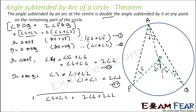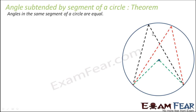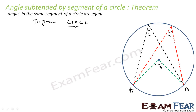Very, very important theorem: angle subtended by an arc at the centre is double the angle subtended by the same arc at any other part of the circle. Another theorem derived from this: angles subtended by the same segment of a circle are equal. If AB is the segment or arc, it subtends the same angle at points on the minor arc — that is, angle 1 equals angle 2.